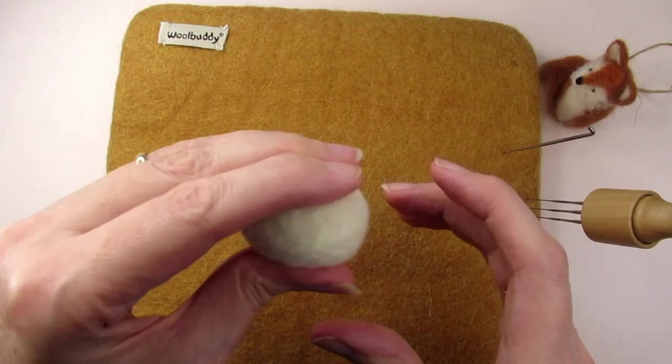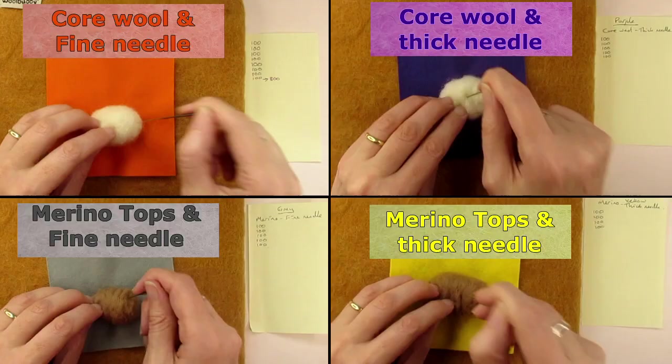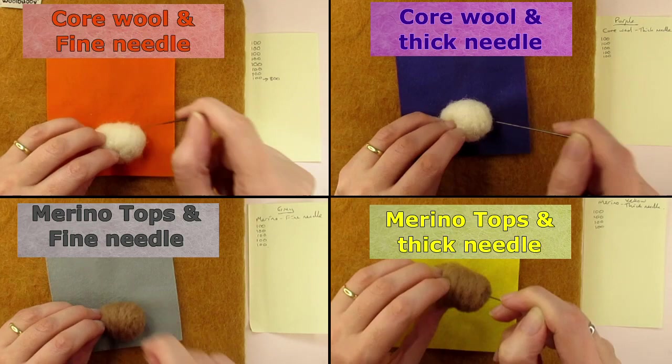This gives you an idea of how firm it needs to be, but what if you're using just merino roving wool or tops, or are using thick needles not fine? Well, let's see how our combinations of wool and needles are getting on in our Great British Stab Off.